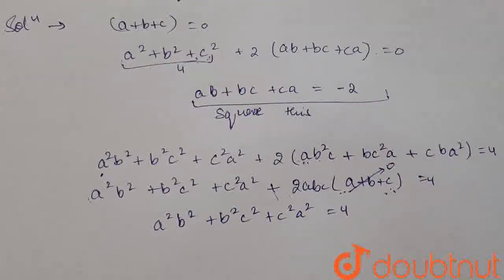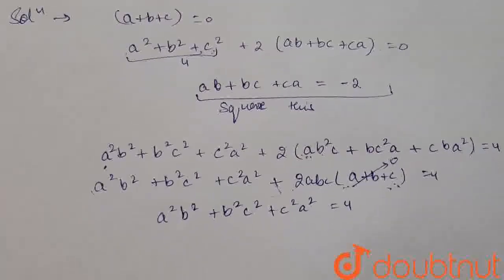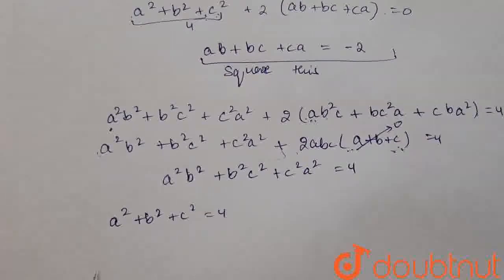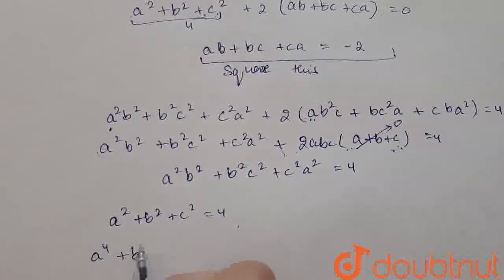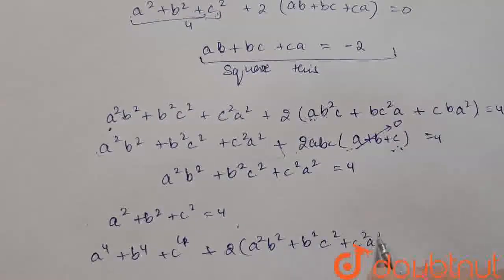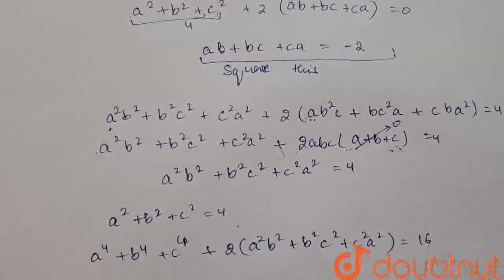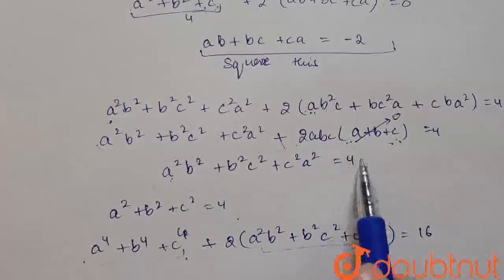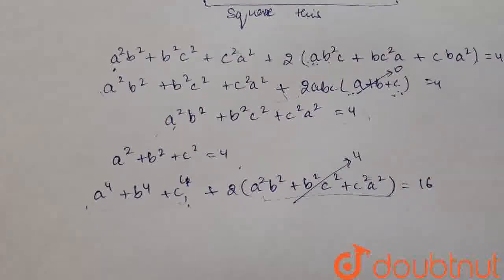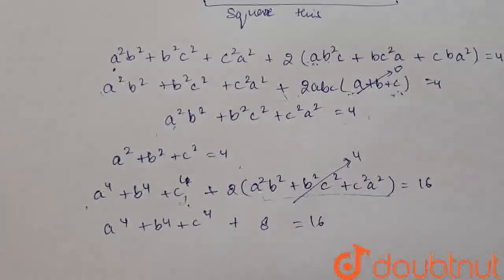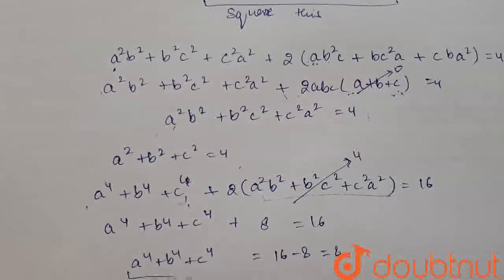Now, the value of a square plus b square plus c square equal to 4 is given to us in the question. So we will square this equation on both sides. This will become a to the power 4 plus b to the power 4 plus c to the power 4 plus 2 times of a square b square plus b square c square plus c square a square, equal to 16. The value of a square b square plus b square c square plus c square a square is 4, which we already calculated. So 4 to 8 plus a to the power 4 plus b to the power 4 plus c to the power 4 equal to 16. Therefore 16 minus 8 is 8. That is the value of a to the power 4 plus b to the power 4 plus c to the power 4. The value is 8.